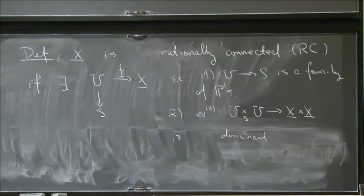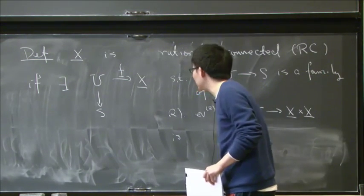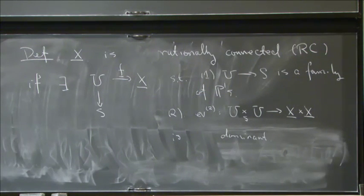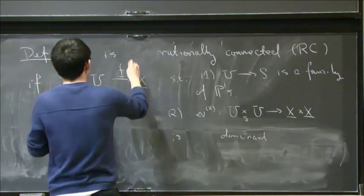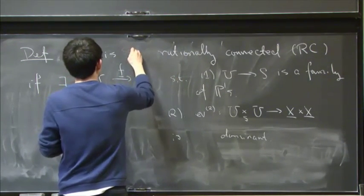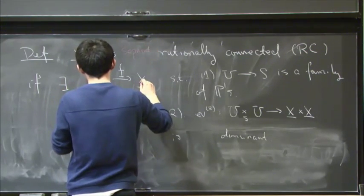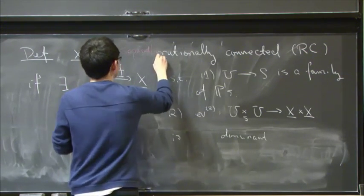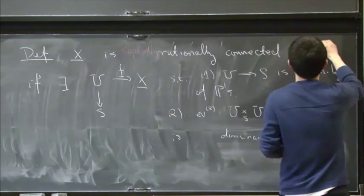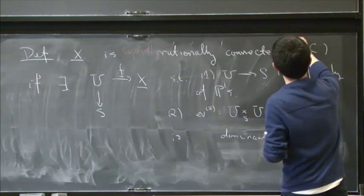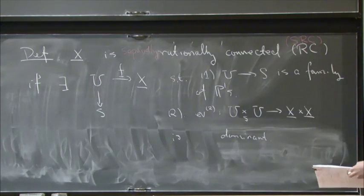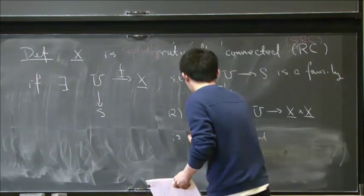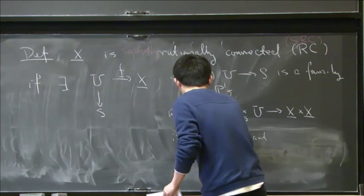So over characteristic zero, this is perfectly good. But for positive characteristics, instead of conditions like this, we want to put separateness. So this is separately rationally connected, and instead of RC, we call it SRC. And we require this two evaluation to be separately dominant.